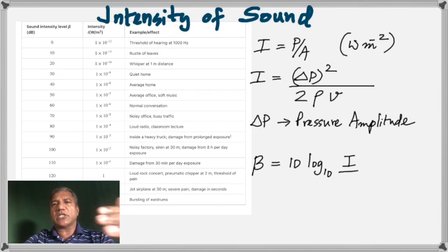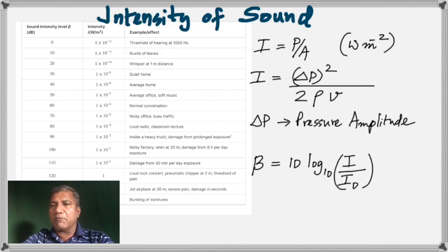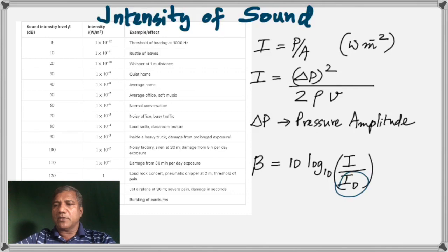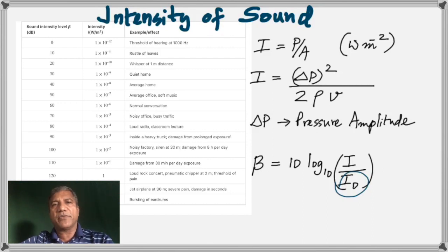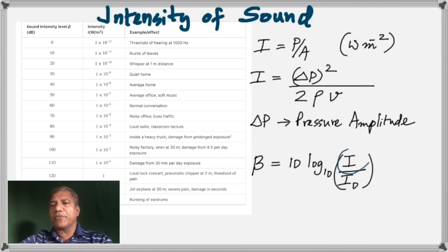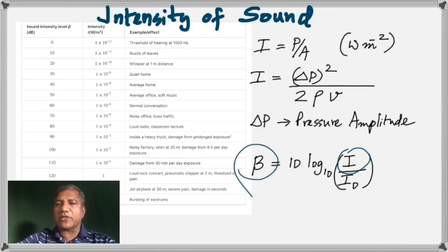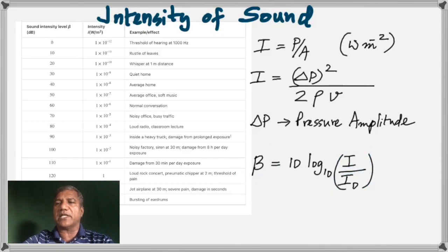To change intensity into decibels, use this formula: beta equals 10 log base 10 of I divided by I₀. I₀ is the threshold of hearing, which is always 10 to the negative 12. So if you're given an intensity in watts per meter squared, you can substitute it here and calculate the decibel value, knowing that I₀ is always 10 to the negative 12.